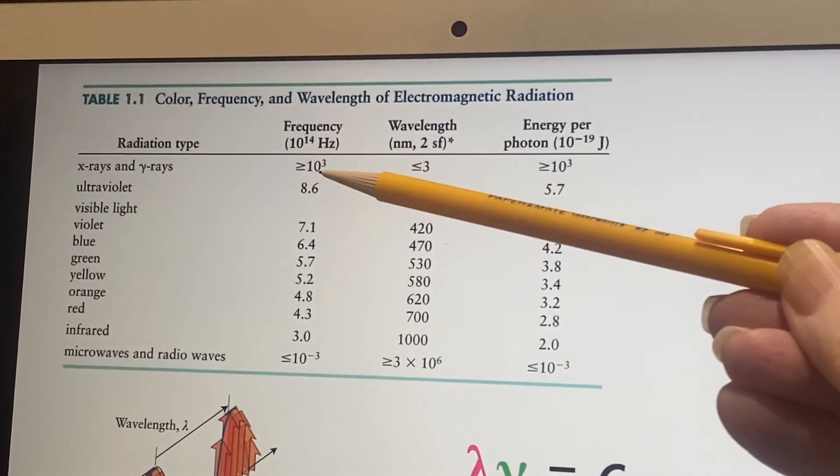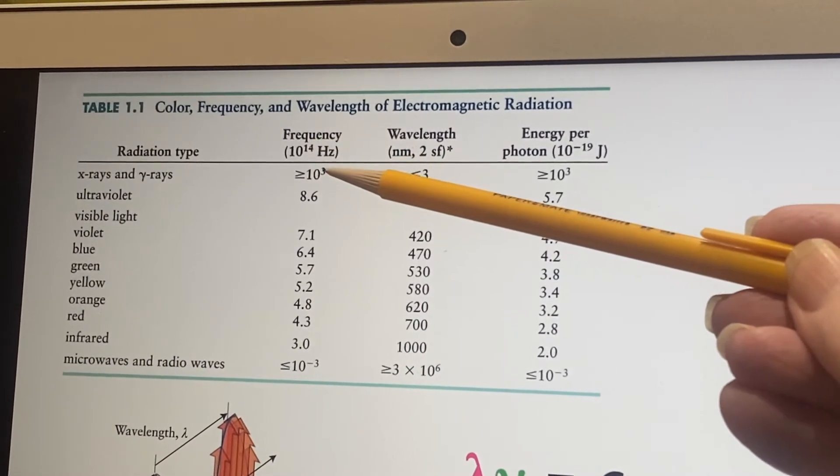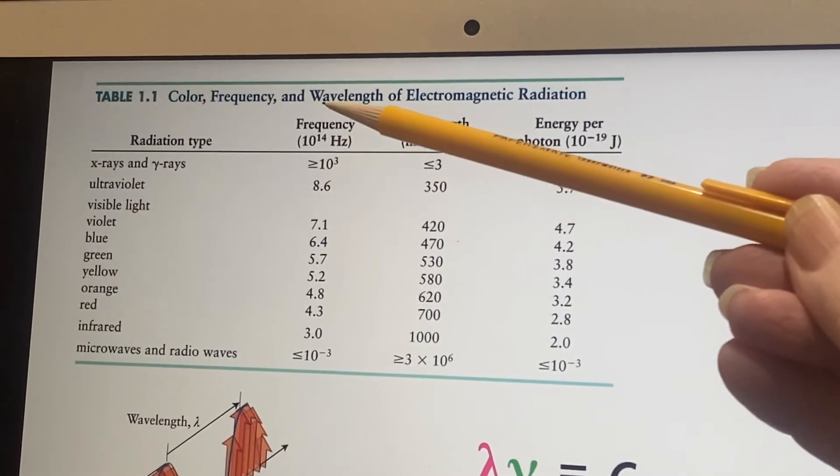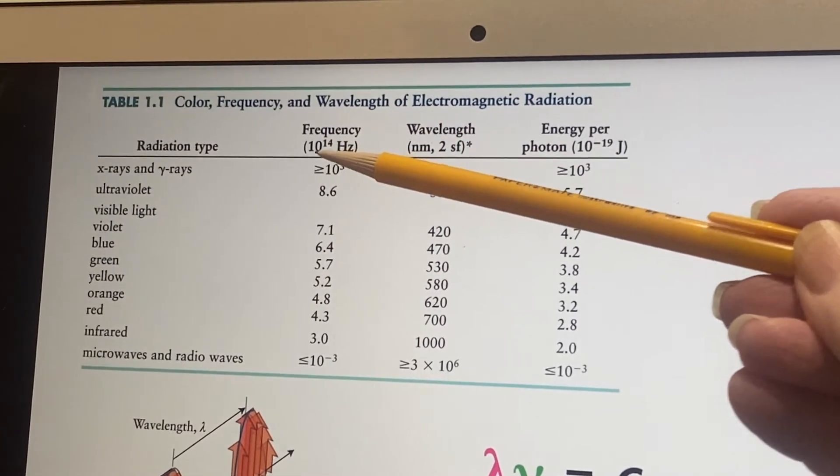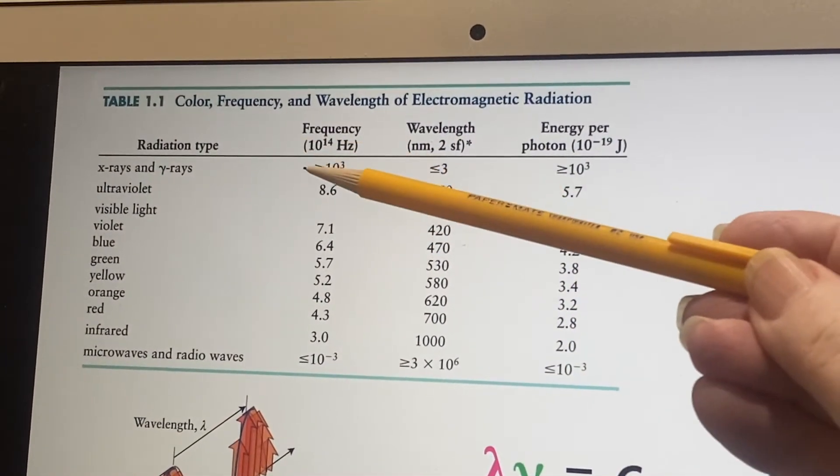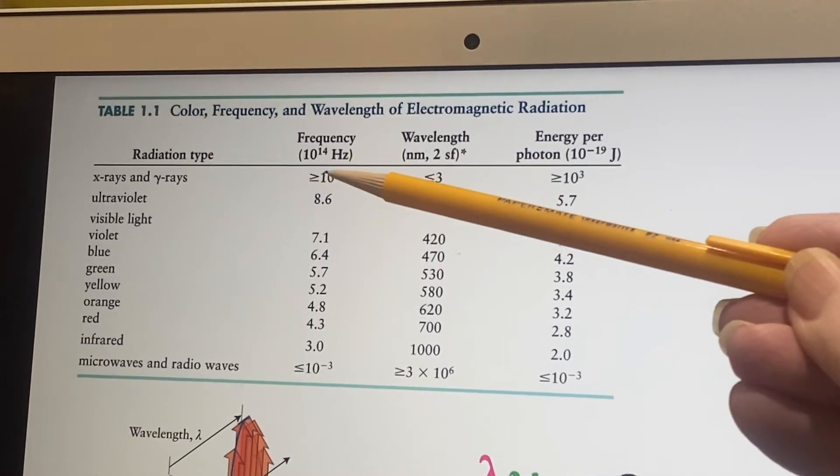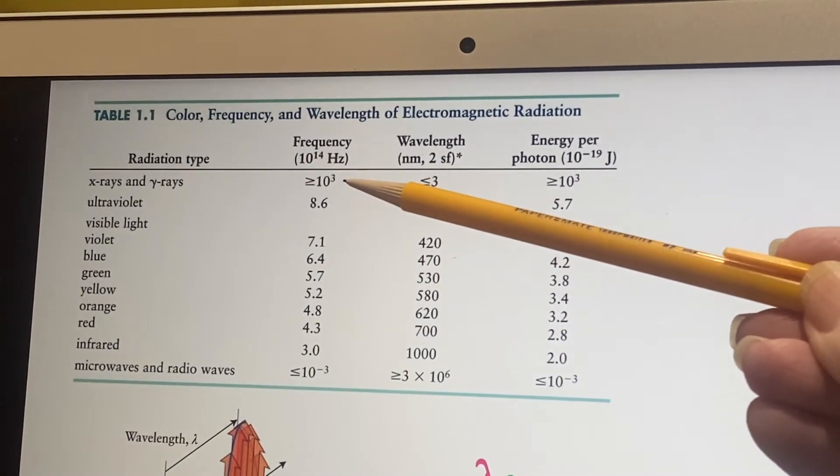So what's this greater than 10 to the 3rd? 10 to the 14th is already greater than 10 to the 3rd. What are they talking about? Well, you'd take the 10 to the 3rd and multiply it by the 10 to the 14th. X-rays and gamma rays would have frequencies that are more than 10 to the 17th Hertz.